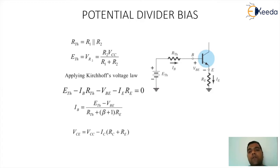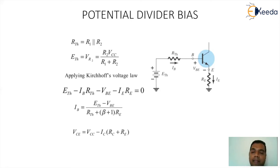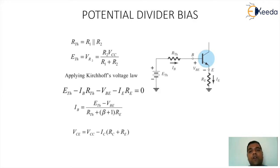When applying KVL to the output loop, we have VCC minus IC·RC minus VCE minus IE·RE equal to zero, and solving gives us VCE. We are primarily interested in the value of IC, since IC equals beta times IB, and that helps in calculating the AC parameter elements. Whether we go for the RE model, hybrid model, or hybrid PI model, we just need to pick one model and find the element corresponding to that model.